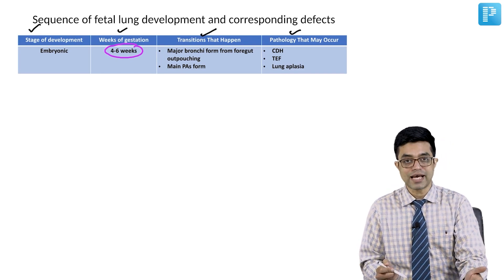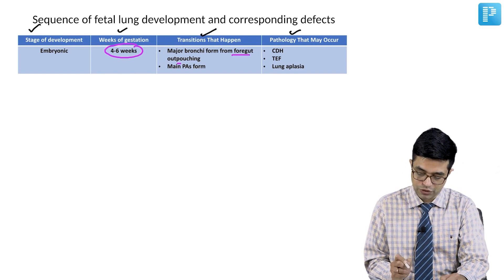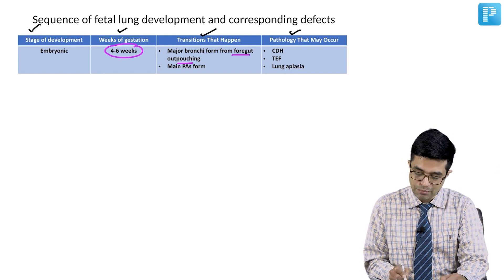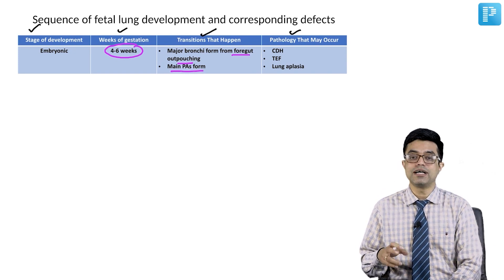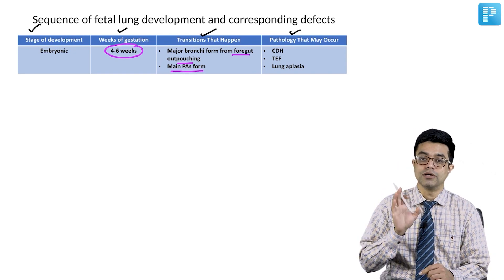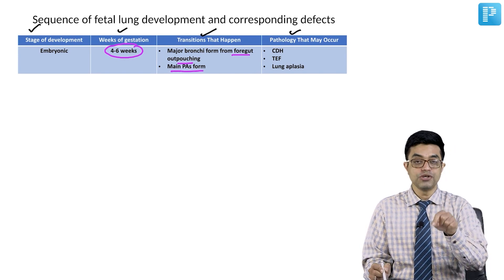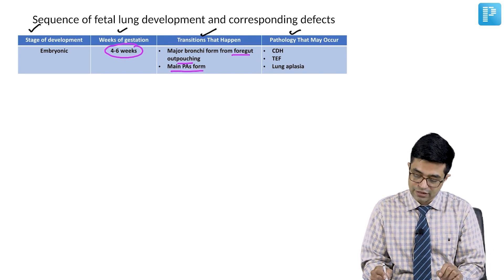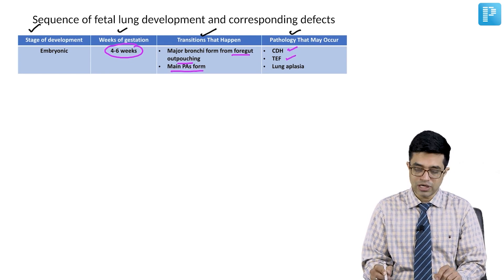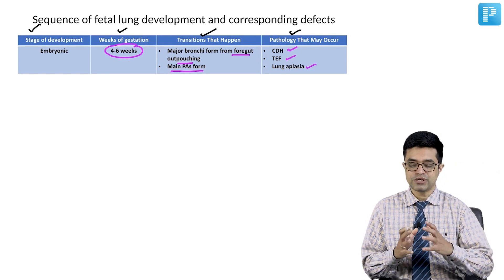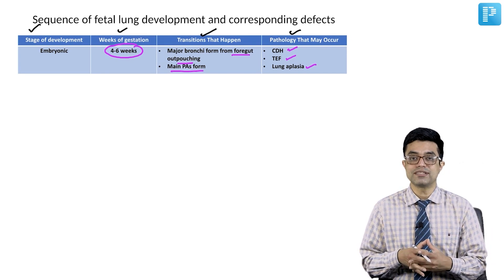During the embryonic stage, the major bronchi form from outpouching of the foregut and the main pulmonary arteries also form — remember pulmonary arteries arise from the mesoderm. Pathologies that may occur include congenital diaphragmatic hernia, tracheoesophageal fistula, and lung aplasia.